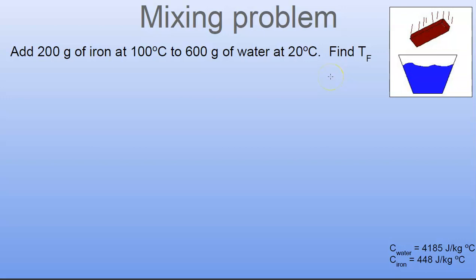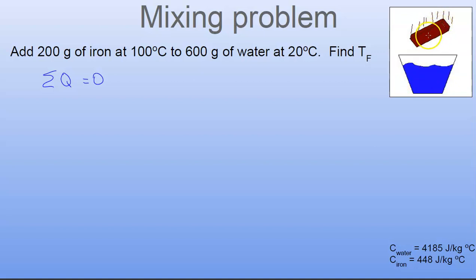This really boils down to a conservation of energy problem. I'm not going to get any free energy and I'm not going to lose any energy — it just moves from the hot iron to the cold water. The first thing to do is write down that the sum of the heat equals zero. There is no free energy, no lost energy here. If this thing loses 800 joules, that thing gains 800 joules, and the sum of those two would be zero. We're assuming no heat escapes out the side or top.